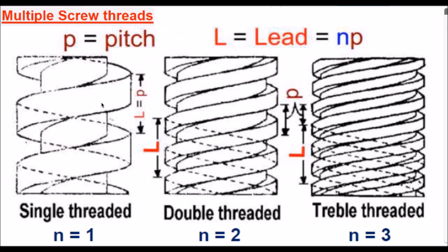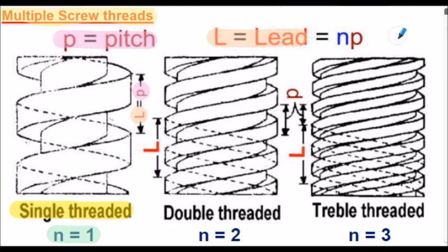Let's consider multiple screw threads. In a single threaded screw, the number of starts, lowercase n, is equal to 1. In this case, the lead of the thread, uppercase L, is equal to the pitch of the thread, lowercase p. So for a single start screw thread, in one revolution the linear movement, or the lead, is equal to the pitch.